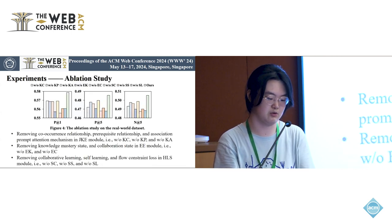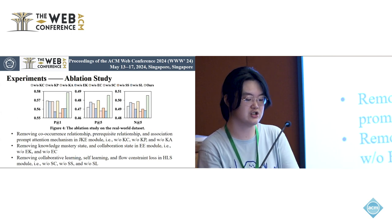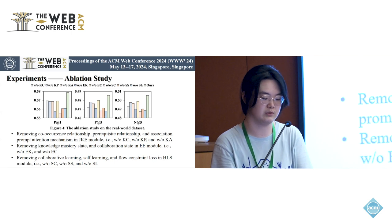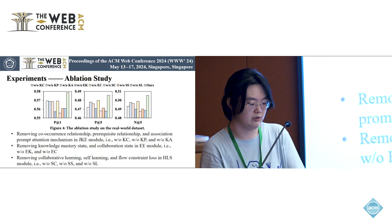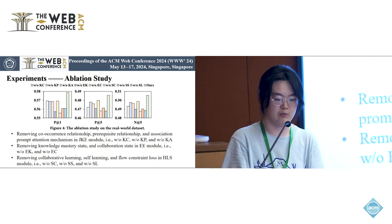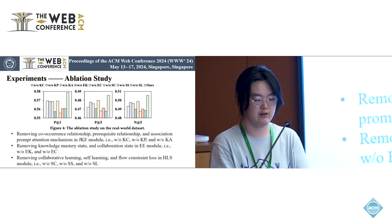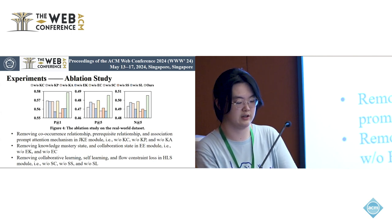To verify the contribution of each component, we design three groups of variants: first, removing co-occurrence relationship, prerequisite relationship, and association prompt attention mechanism in the GKE module; second, removing knowledge mastery state and collaboration state in the EE module; third, removing collaborative learning, self-learning, and flow constraint loss in the HLS module. Figure 4 shows the performance of these variants, which demonstrates the effectiveness of each component.